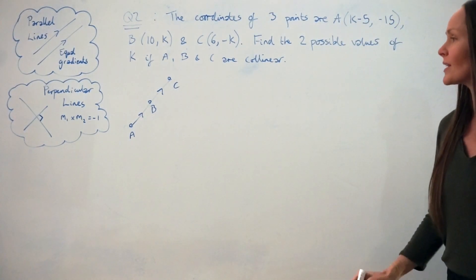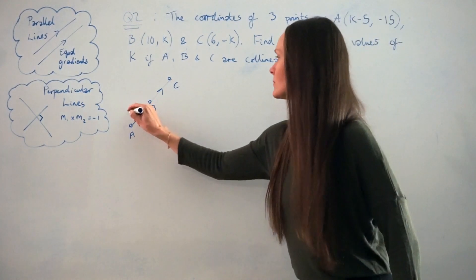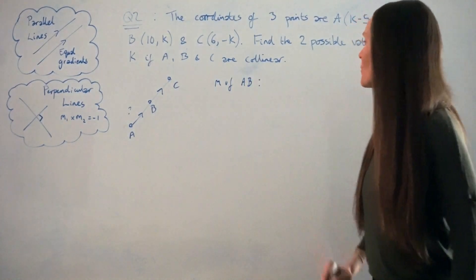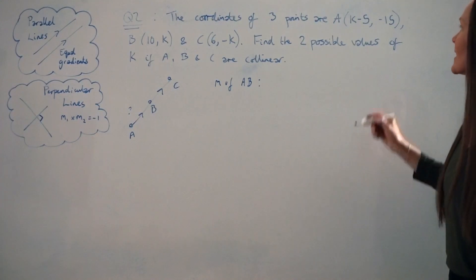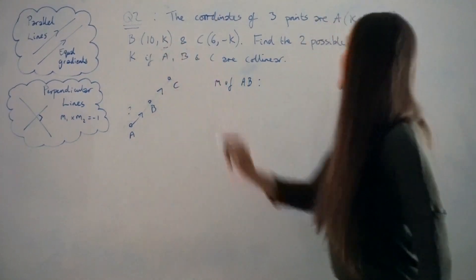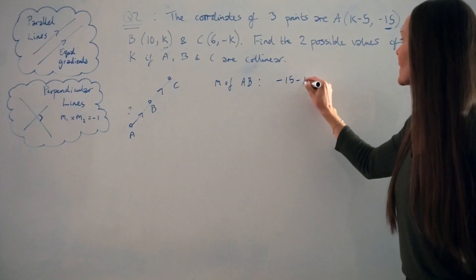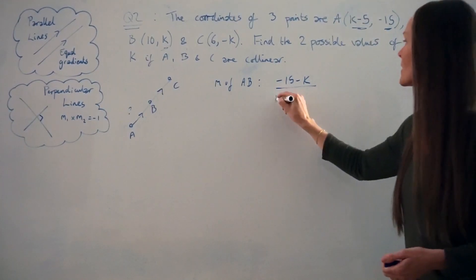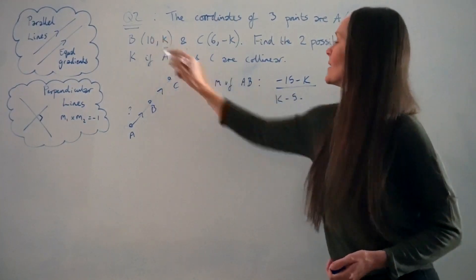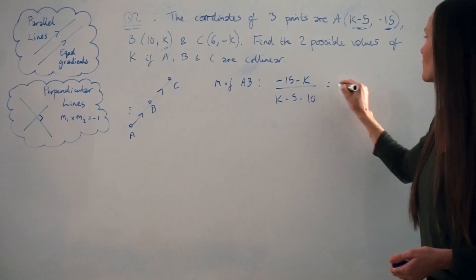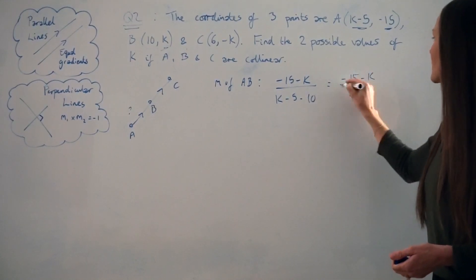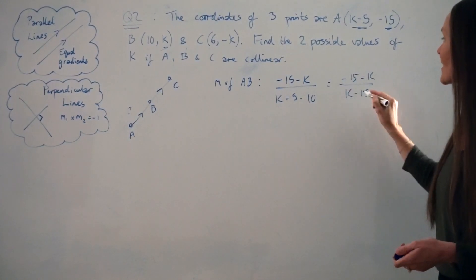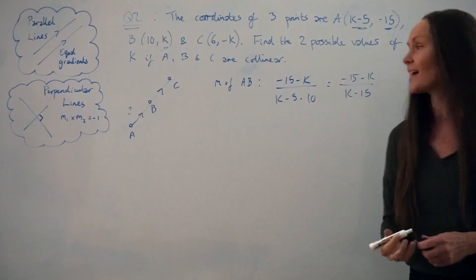Let's work out the gradient of AB — M of AB. Using rise over run, I subtract the Y values: −15 take away K. Then divide by the difference in X values: (K−5) take away 10. Simplifying the denominator, −5 take away 10 is −15, so it becomes K take away 15. So the expression for the gradient of line AB is (−15 − K) over (K − 15).